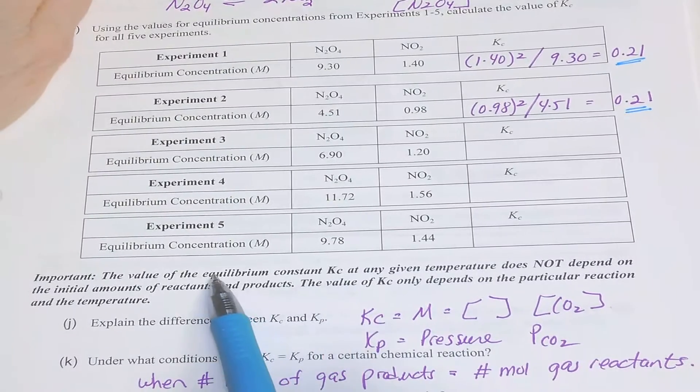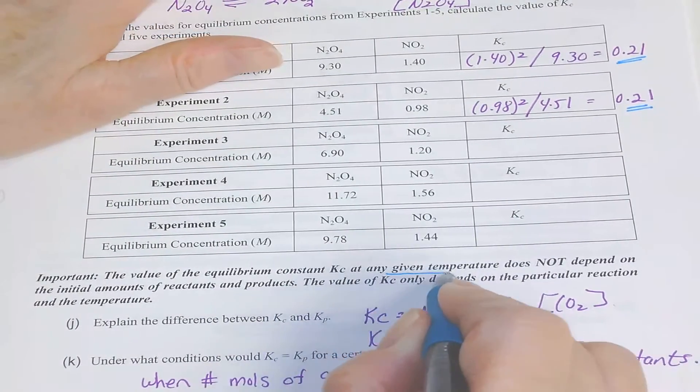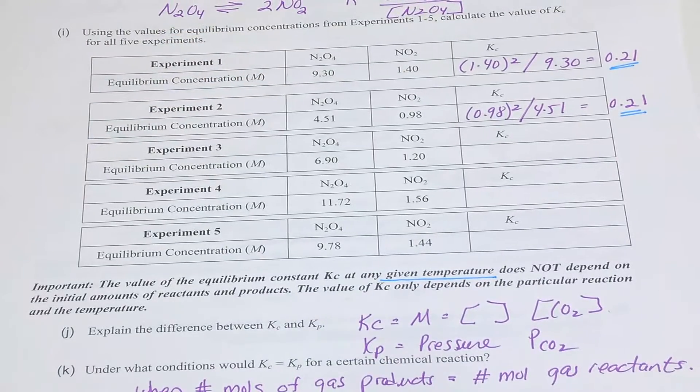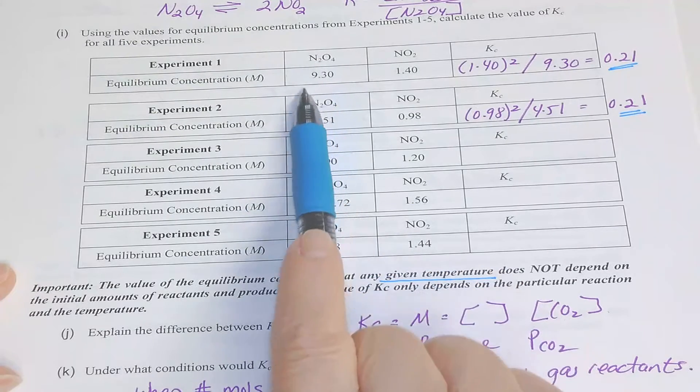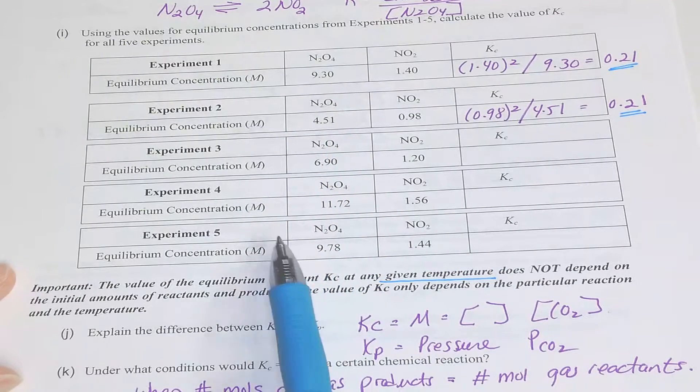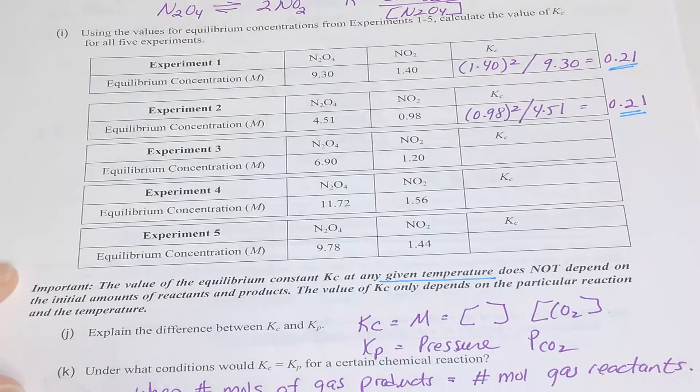What you're trying to prove to yourself is that the value of that constant at any given temperature, if you change that temperature, you will change that equilibrium constant. It doesn't depend on where you start your reaction. It simply depends on that ratio of reactants to products.